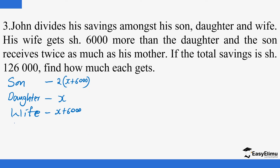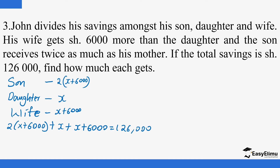So: 2(x + 6,000) + x + (x + 6,000) = 126,000. Opening the bracket: 2x + 12,000 + x + x + 6,000 = 126,000.